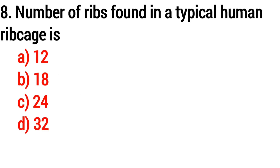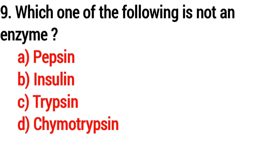Question number eight: the number of ribs found in a typical human rib cage? Answer option C — 24. Question number nine: which one of the following is not an enzyme? Answer option B — insulin.